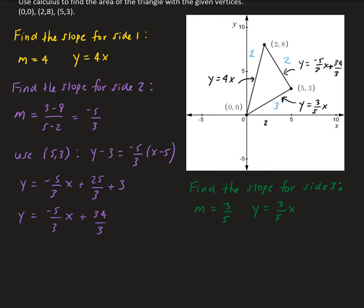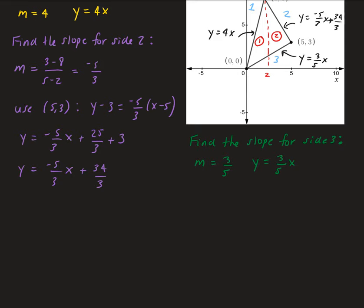Now that we have all the sides, we need to split this into two regions using the vertical approach. The first integral goes from 0 to 2, and the second region goes from 2 to 5. The key point here is at x = 2. We need to find the area for each region separately.